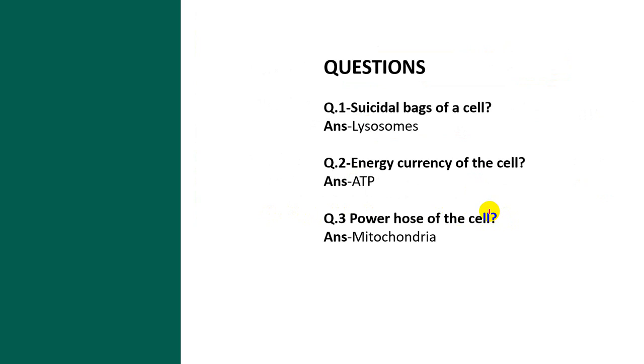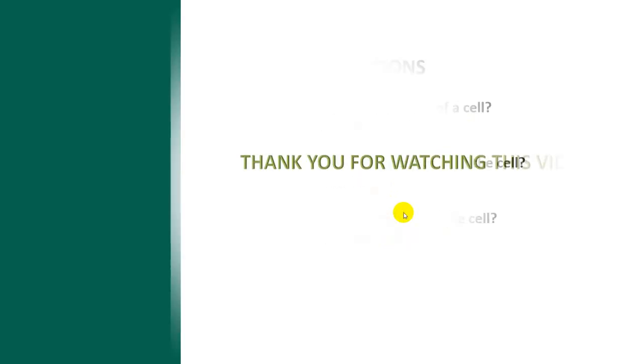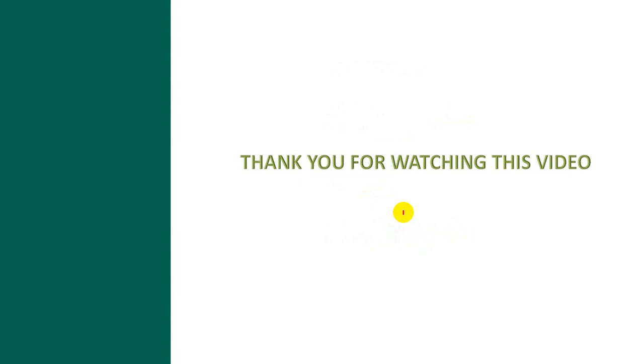To summarize some key MCQ points: suicidal bags of the cell are called lysosomes; the energy currency of the cell is called ATP; and the powerhouse of the cell is called mitochondria. If you have any doubt, please comment in the description box. Hope you like the video and can use it to solve questions for SSC JE, RRB JE, and other competitive exams. Thank you for watching — do thumbs up, share, and subscribe to this YouTube channel.